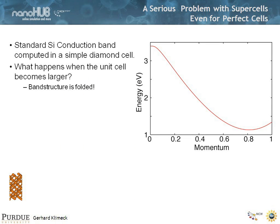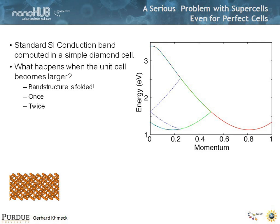Before we do that, we have to realize there's a problem. Say we do this for silicon: we calculate a band structure in a tiny cell. We would have the conduction band edge with a gamma point and an x point, and we understand that in silicon. If we double the unit cell, we fold the band structure in half — we get the green line instead of the red line. Those are the eigenvalues of our doubled unit cell. If we double the cell again, we fold the band again. And again, we fold it again.